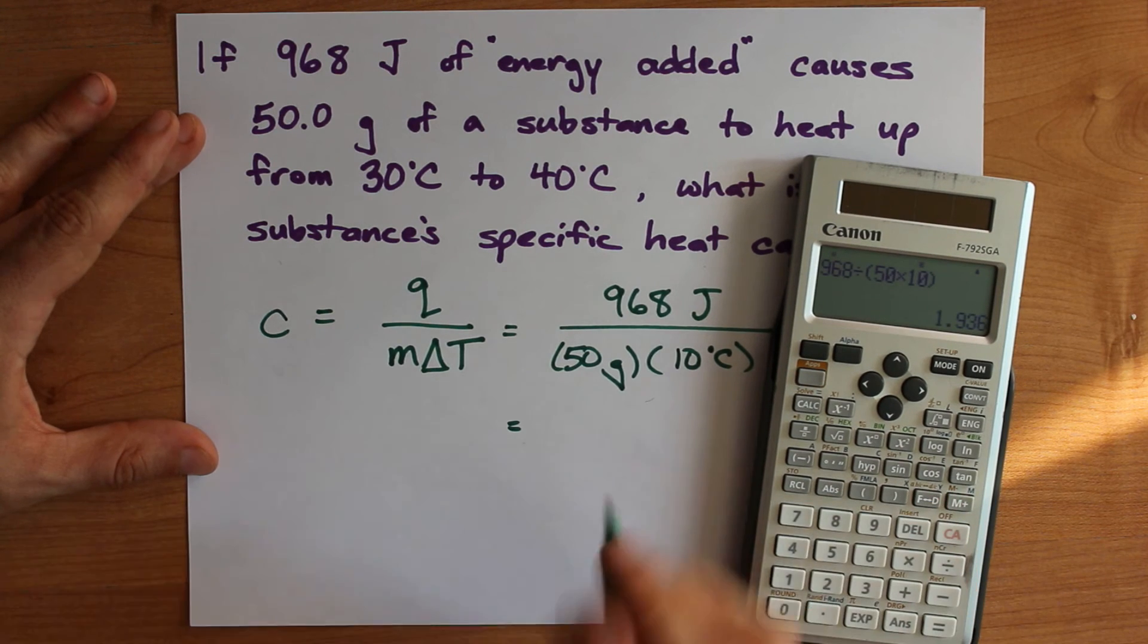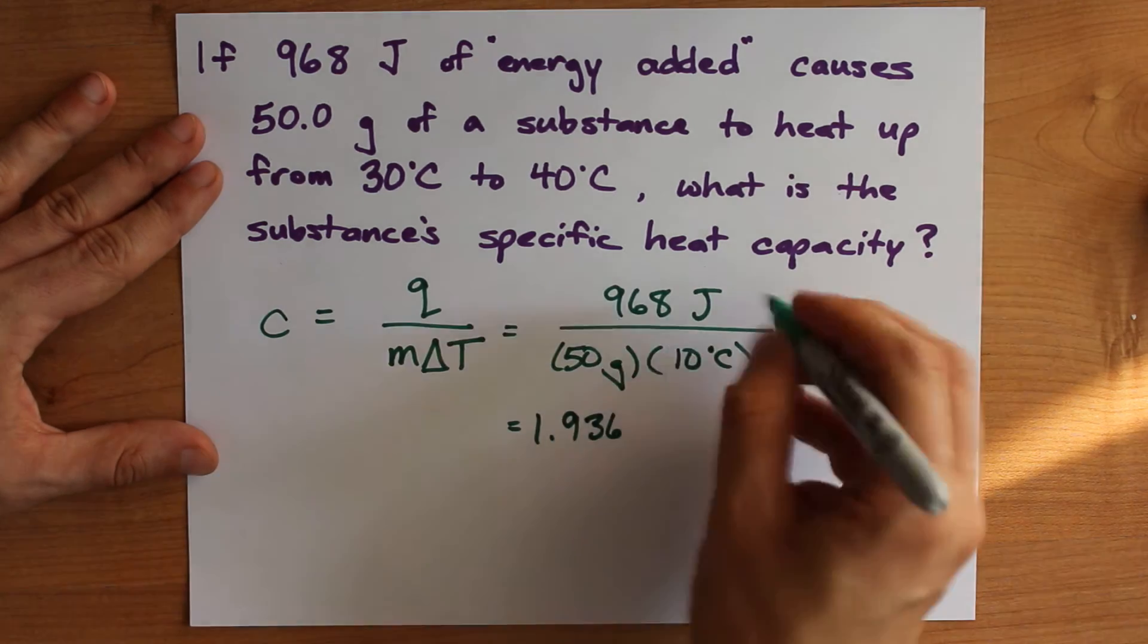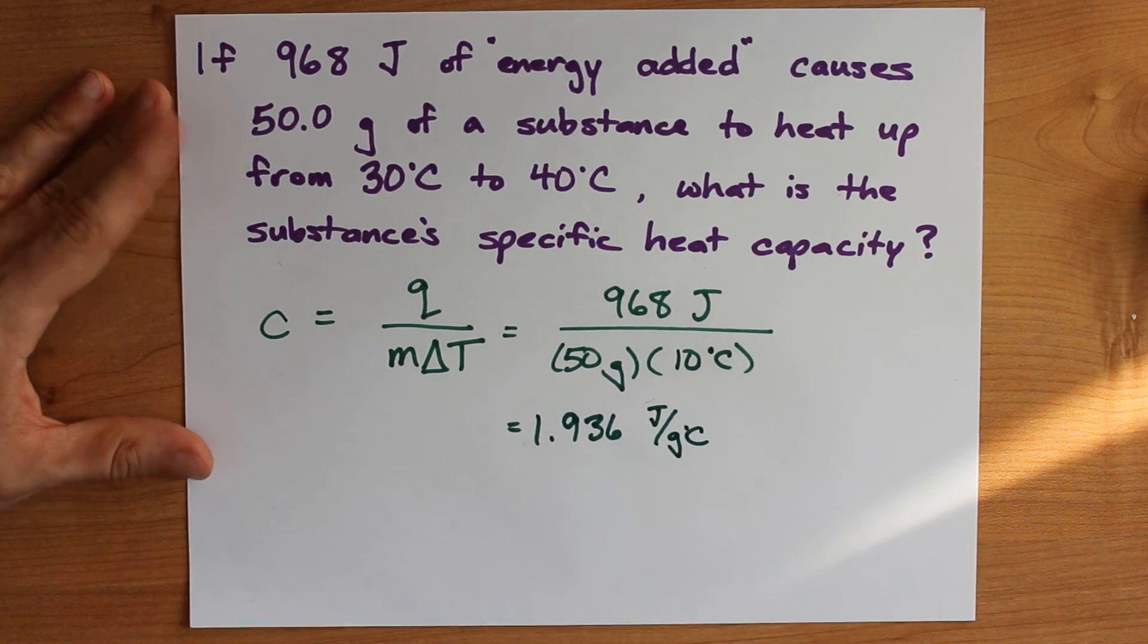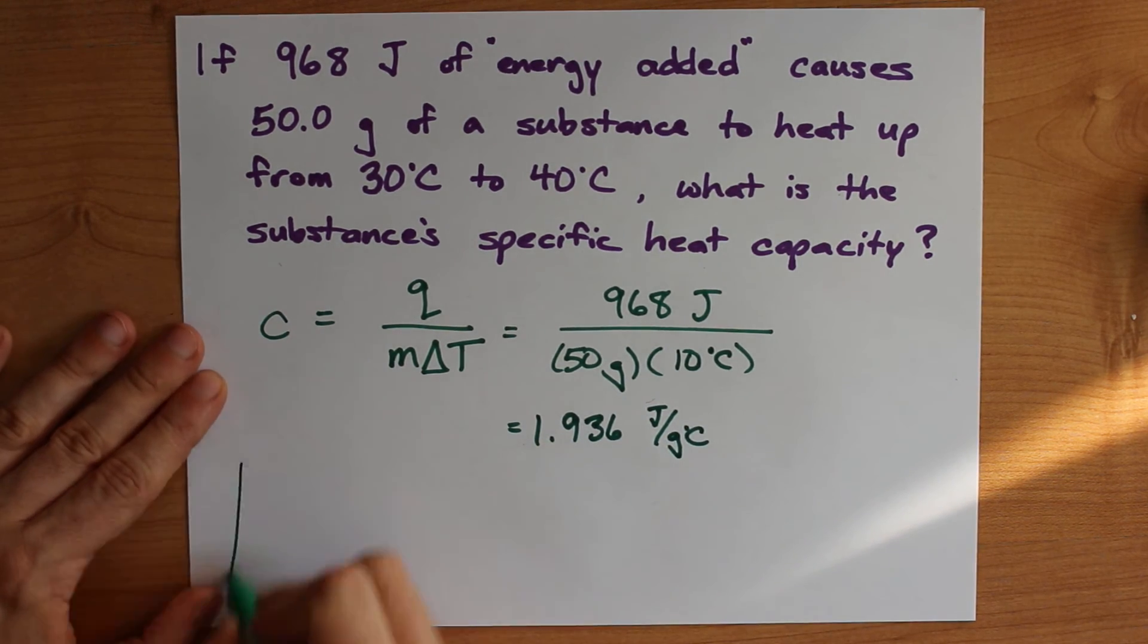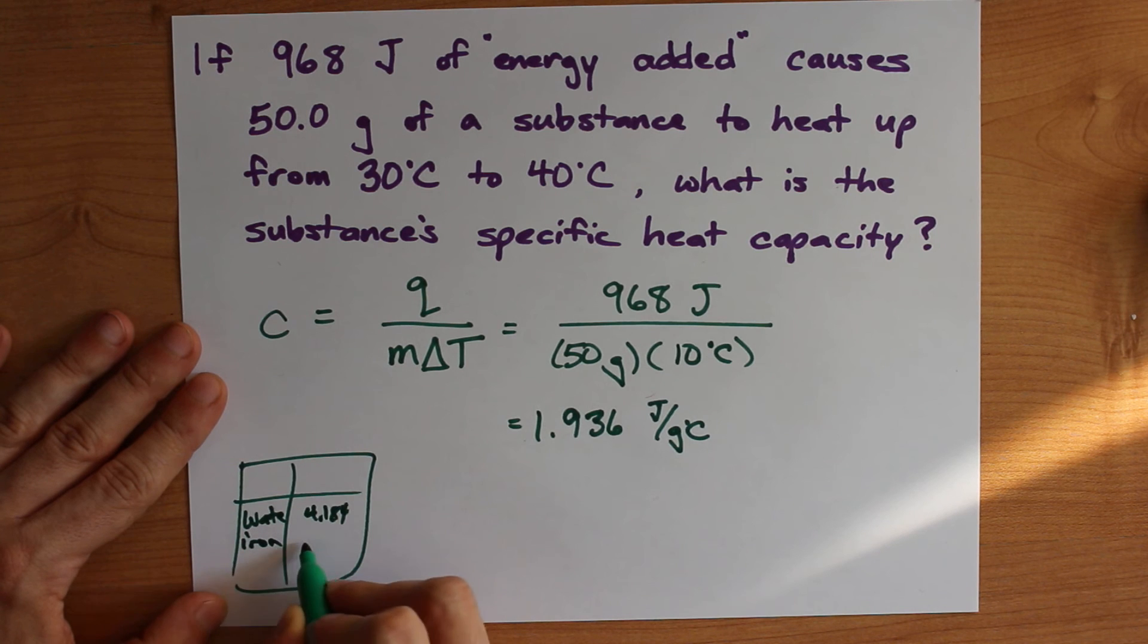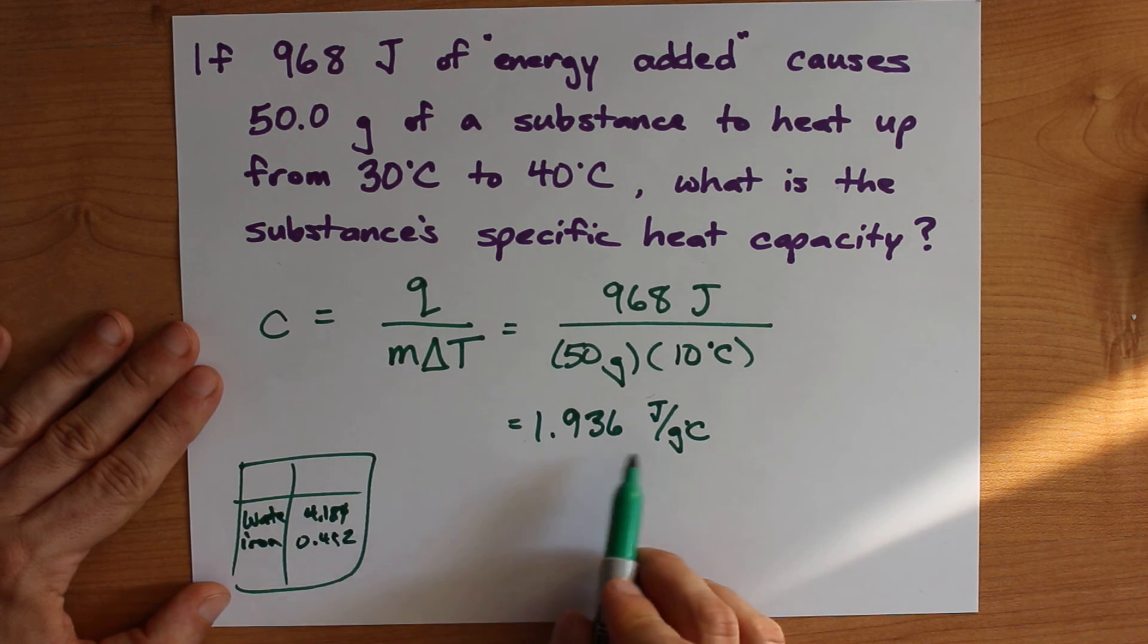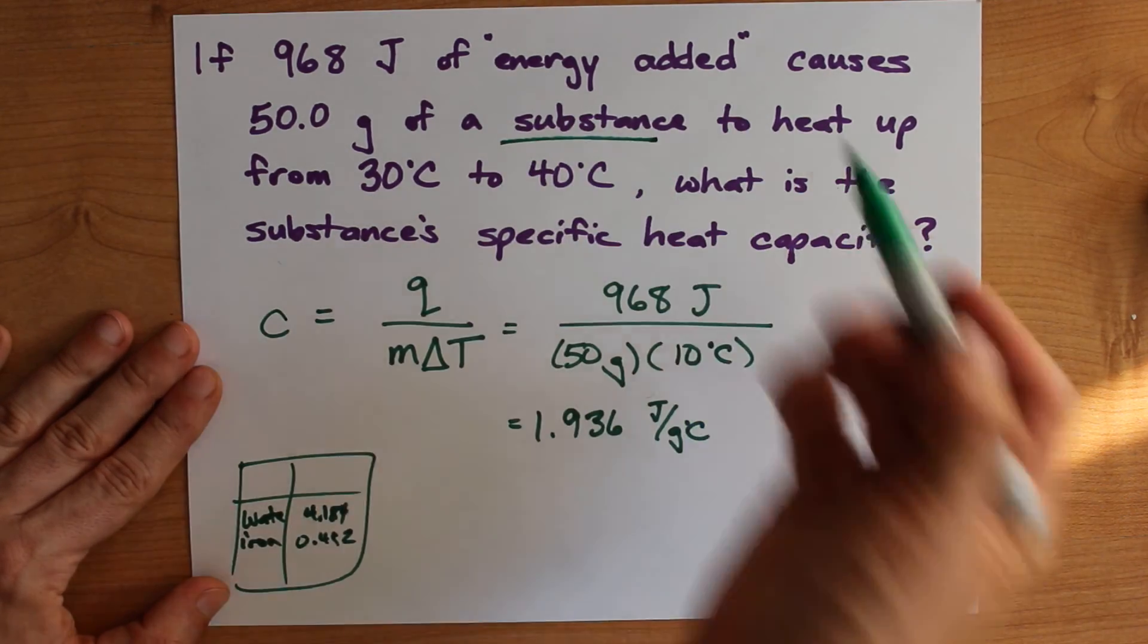That gives me 1.936 and my units here nothing cancels, so I have joules over grams and degrees celsius. Now if you're given a table of specific heat capacities, like water being 4.184 and iron being 0.452, you can look through for something that's about 1.9 and then you might even be able to identify what the substance is.